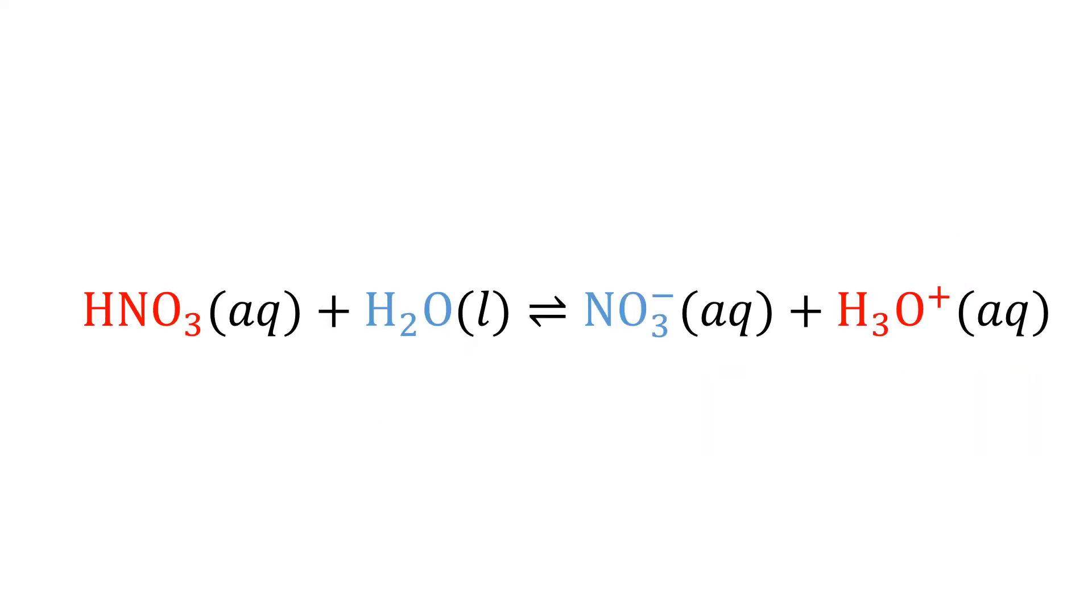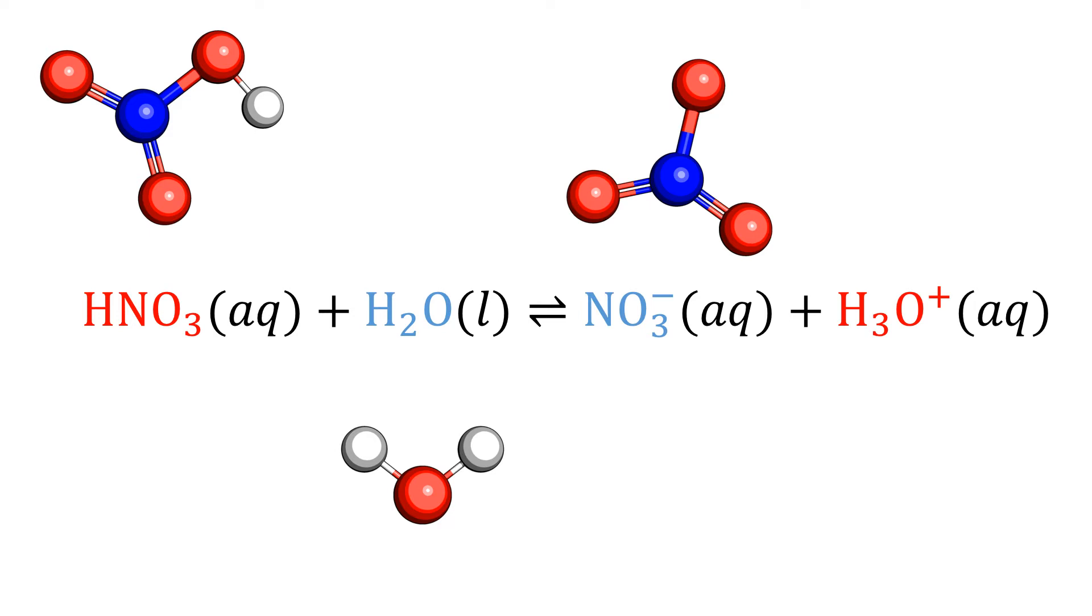An acid and a base will react to produce an acid-conjugate base pair. Here we have the dissociation of nitric acid, which is a strong acid in water. The nitric acid gives up a proton and becomes a conjugate base because it could potentially gain a proton to form the acid again. The same thing happens to the base, water, only in reverse. A conjugate acid is formed that could donate a proton.